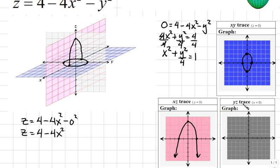Next, let's investigate our yz-trace by letting x be 0 in our quadratic equation. So this would be z equals 4 minus 4 times 0 squared minus y squared. And so, simplifying, we get z equals 4 minus y squared since 4 times 0 squared is 0.